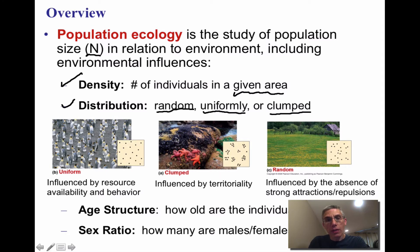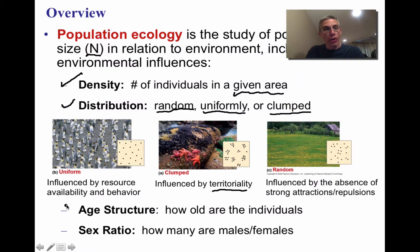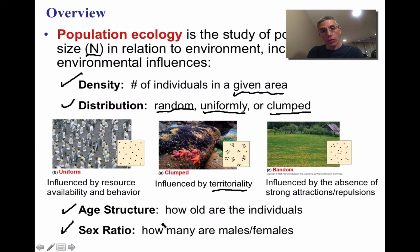Clumped distribution is influenced heavily by territoriality — the idea that organisms have a defined area they inhabit and defend from other organisms. A third influence is age structure, which looks at how old individuals are within a population. The fourth is sex ratio — how many members of that population are male versus female.